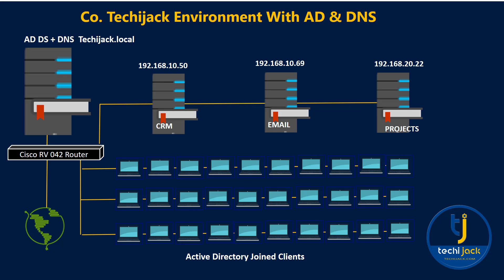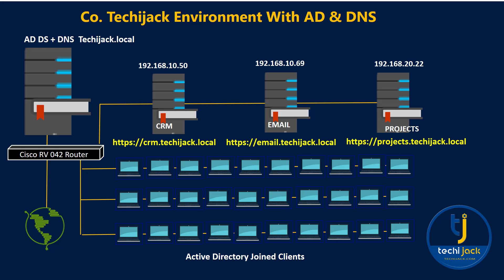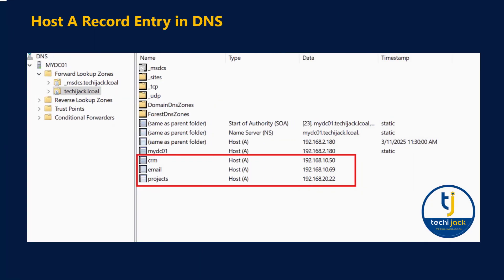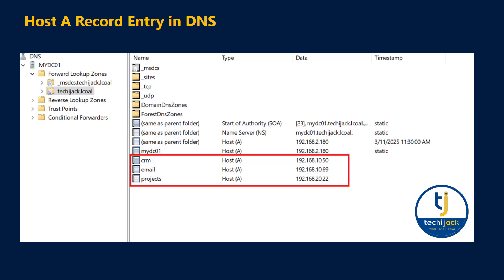We can simply add host record entries in our DNS server, such as crm.techyjack.local pointing to 192.168.10.50, and the same for email and projects. Once configured, we can open links like https://crm.techyjack.local, email.techyjack.local, and projects.techyjack.local. Now they are in a more organized way. If you introduce any new application, you can configure your DNS accordingly. This is exactly what the host entries will look like in your DNS for different services.